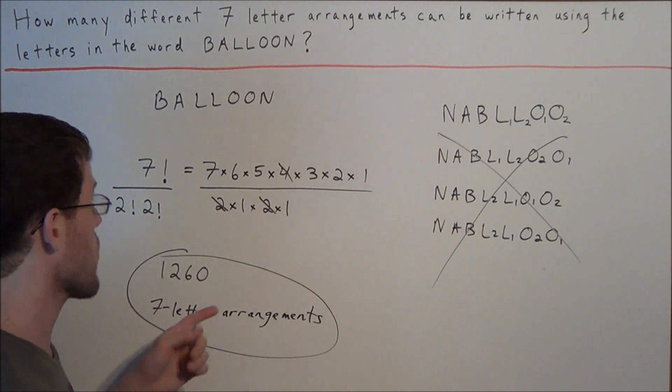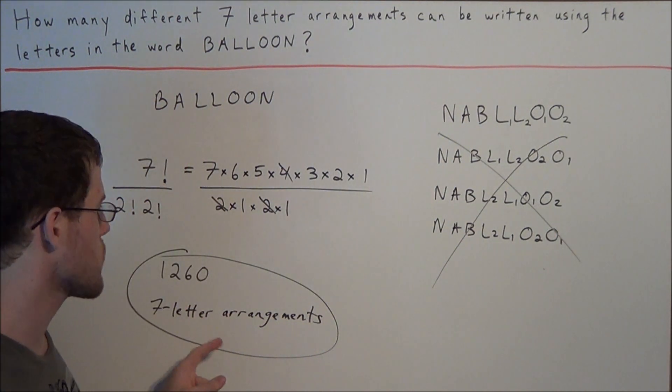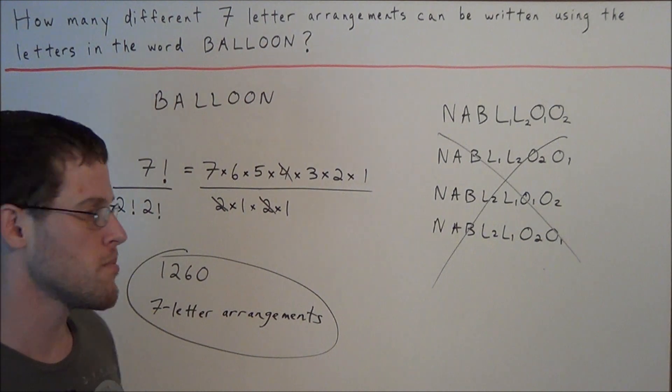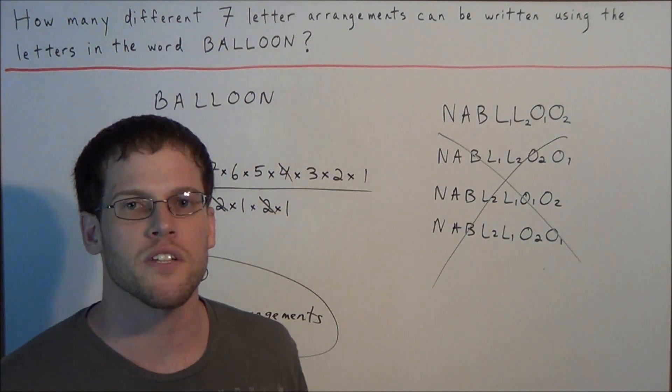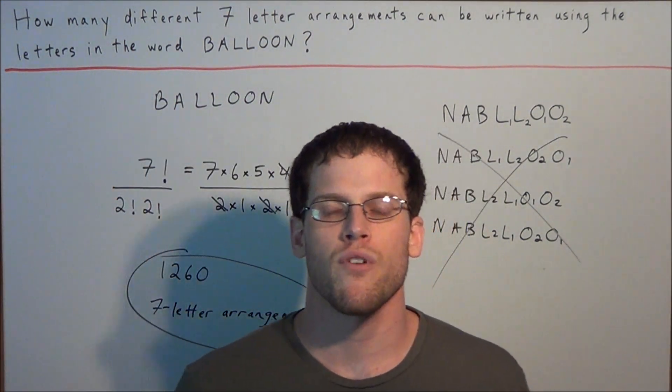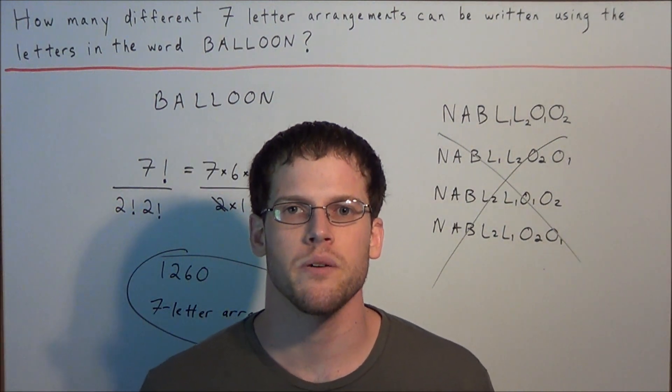So once again, our answer to this problem, we have 1260 seven letter arrangements using the letters in the word balloon. Okay, well this is going to conclude this permutation with repetitions problem. Thank you all for watching, and I hope this video was helpful.